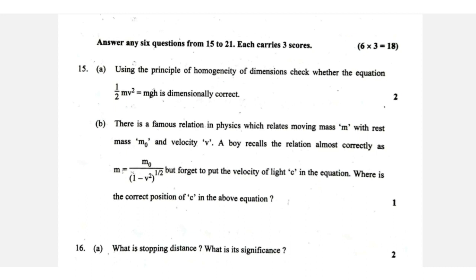The 3-mark question is on units. The principle of homogeneity is applied to verify equations. For half mv squared equals mgh, the kinetic energy equals gravitational potential energy — the equation is correct dimensionally. For relativistic equations, where v squared divided by c squared appears, the dimensions cancel since V squared over c squared is dimensionless.